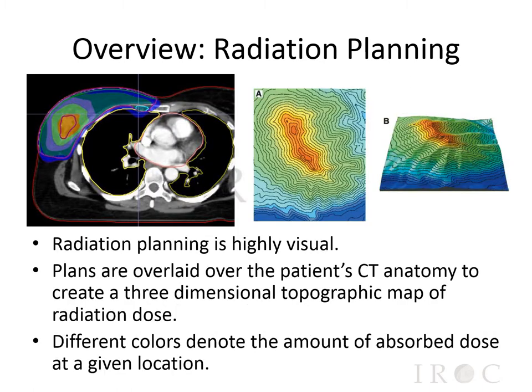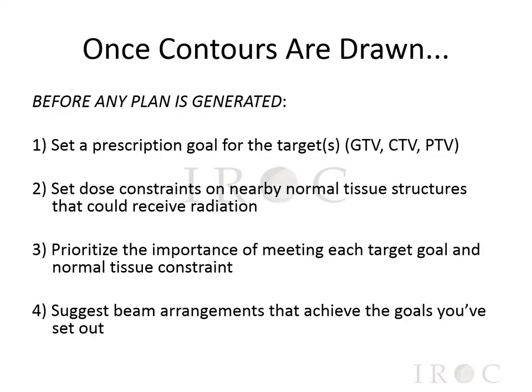One of the key aspects of radiation planning is that it is a highly visual process, so plans are overlaid over the patient's CAT scan anatomy to create a three-dimensional topographic map of radiation dose, where different colors denote the amount of absorbed dose at any given location. Once contours are drawn, but before any plan is generated, there are certain steps that need to be taken. First, the radiation oncologist should set a prescription goal for the targets and dose constraints on nearby normal tissue structures. They should also prioritize the importance of meeting each target goal and normal tissue constraint, and share this information with the dosimetrist. The radiation oncologist can also suggest beam arrangements in advance of the dosimetrist planning the case.